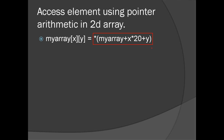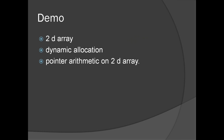In the case of a 2D array, how do we access elements using pointer arithmetic as we did in a one-dimensional array? X is the first index and Y is the second index. We access the element using the starting address — adding the computed offset to the starting address gives us the particular element. The logic comes from the fact that X designates which array of 20 integers we are in.